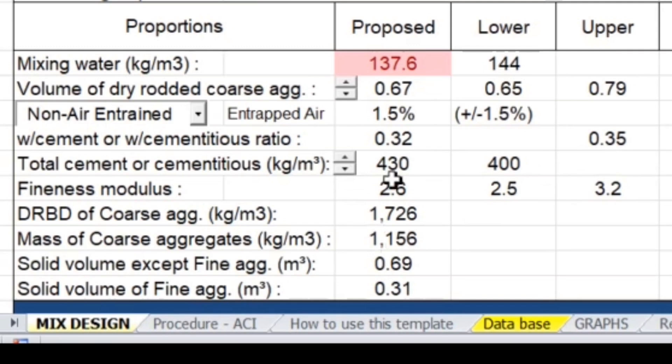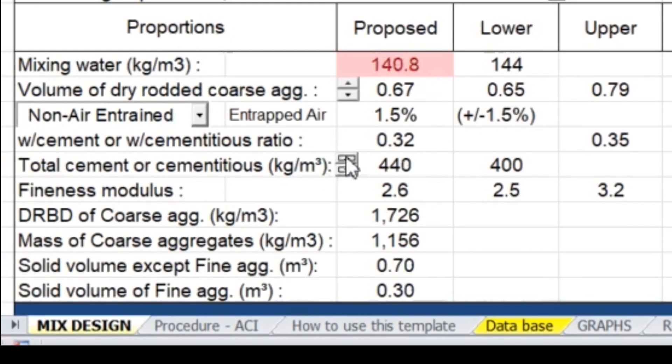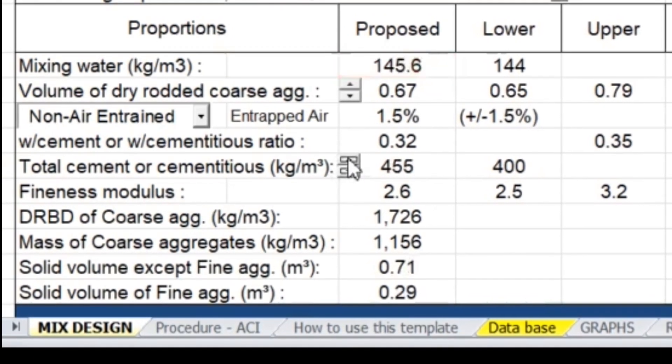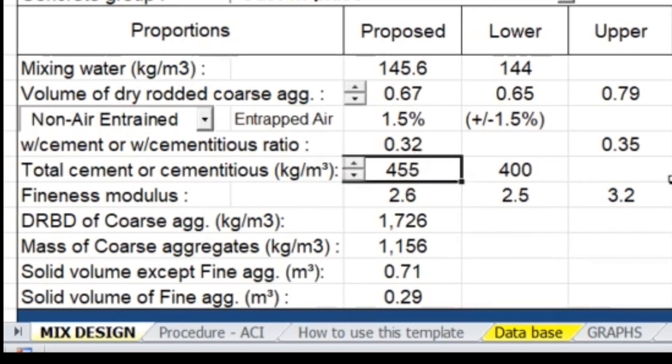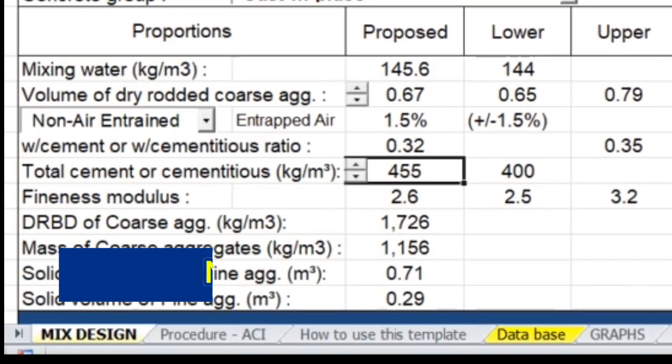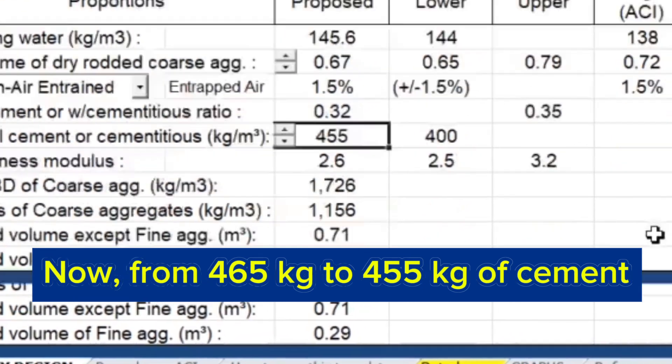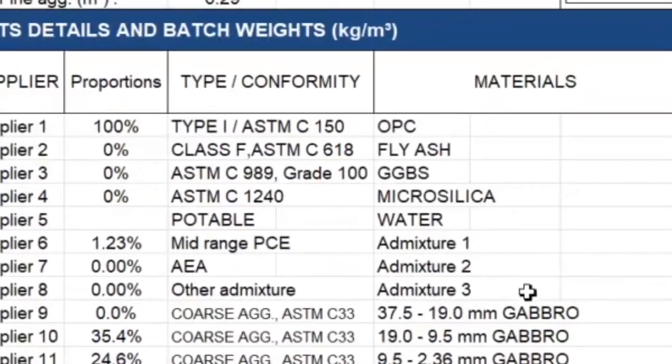So in this case, I have to increase a little bit of cement content to cover the required water content. So now it's 455 kg. Still, I'm using 10 kg less than the original mix design, which was 465 kg with new target strength of 58.3 MPa.